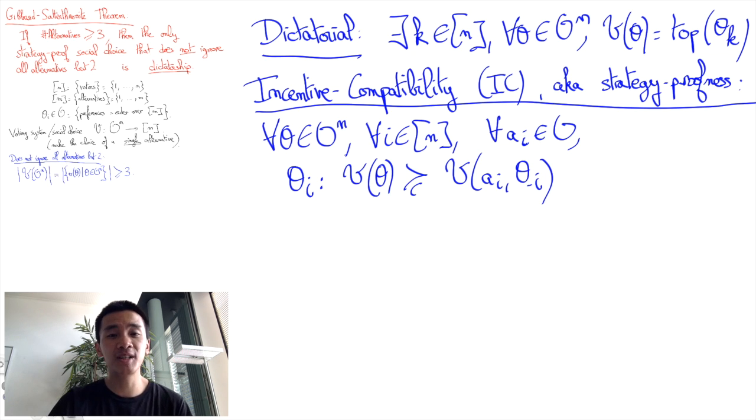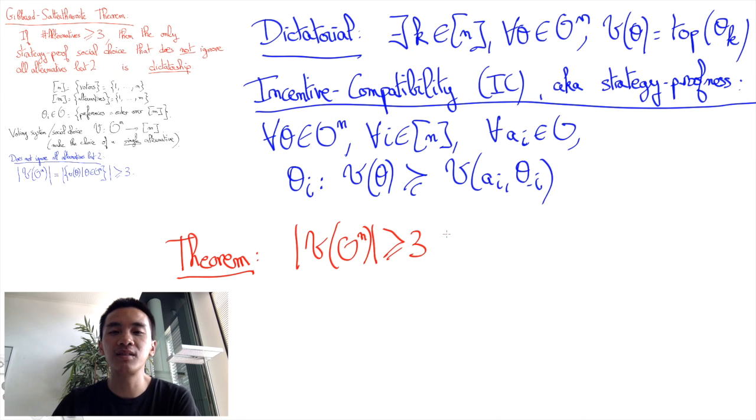The Gibbard-Satterthwaite theorem, which was first proved by Alan Gibbard in 1973 and then proved again independently by Mark Satterthwaite in 1975, asserts that if the cardinality of V of O to the power N is at least 3 and if we have IC, then V is actually dictatorship. This is very bad.